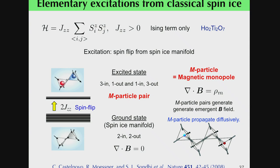When the Hamiltonian has only an Ising term, its ground state is found to be a classical spin-ice state. In the ground state, two spins point inward and the others point outward. The excited state is given by a spin flip, which gives rise to three-in one-out and one-in three-out spin configurations.